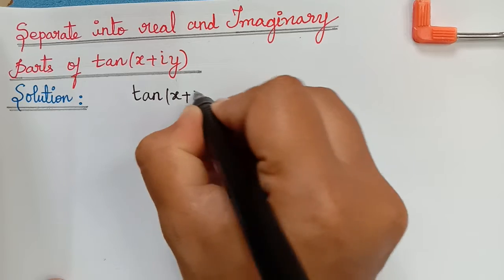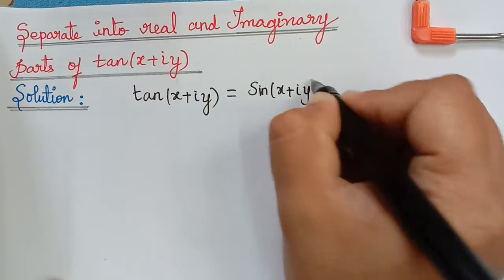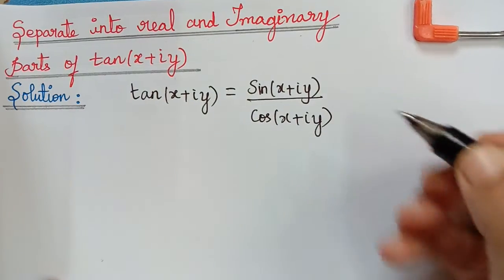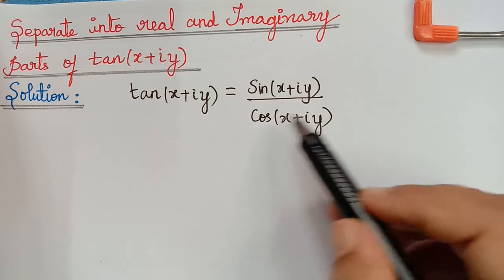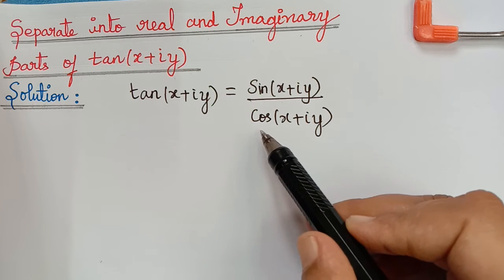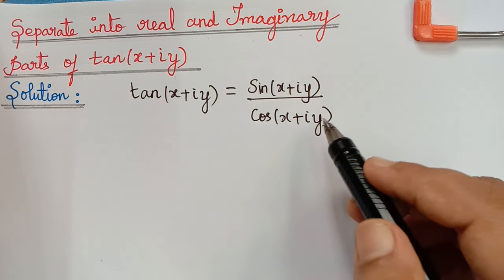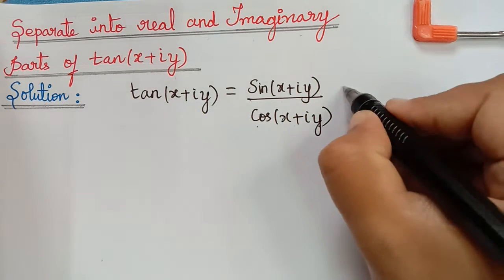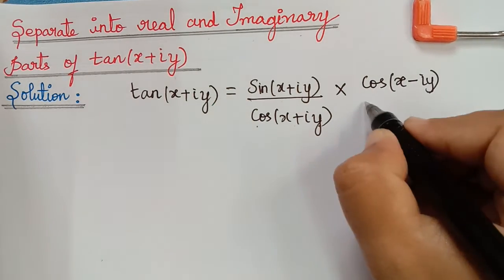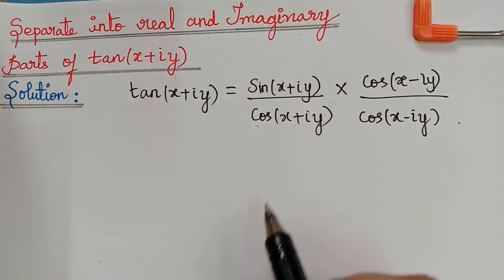We already know that tan can be written as sin by cos, so tan(x + iy) can be written as sin(x + iy) divided by cos(x + iy). Whenever we have an imaginary number in the denominator, we have to multiply and divide by its conjugate. The conjugate of cos(x + iy) is cos(x - iy), so we multiply and divide by cos(x - iy).